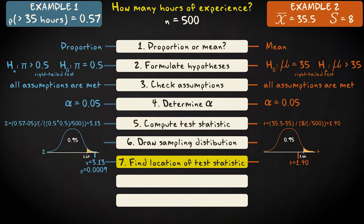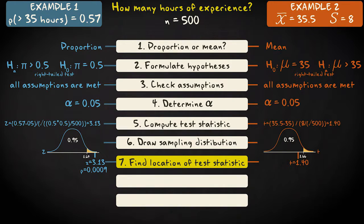Statistical packages can also give you the exact p-value when you use the t-distribution. It is impossible, however, to look it up in the t-table, because the t-table is not specific enough. Since the shape of the distribution changes with the degrees of freedom, we would need a separate table for each number of degrees of freedom. That's why for each degrees of freedom, only the most important t-values are listed — those corresponding to the most commonly used significance levels for one- and two-tailed tests.